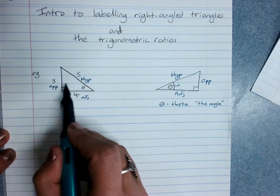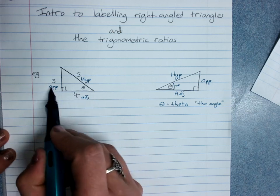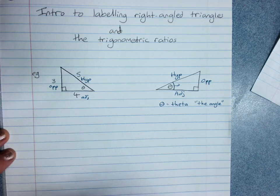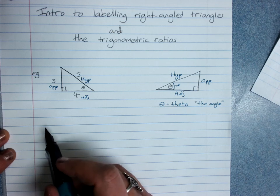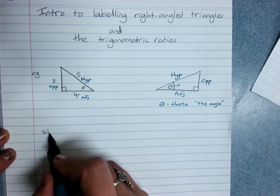There's three possible pairs we could have: opposite and hypotenuse, hypotenuse and adjacent, or opposite and adjacent. And the trig ratios are just saying these are these three pairs of sides that we might use.